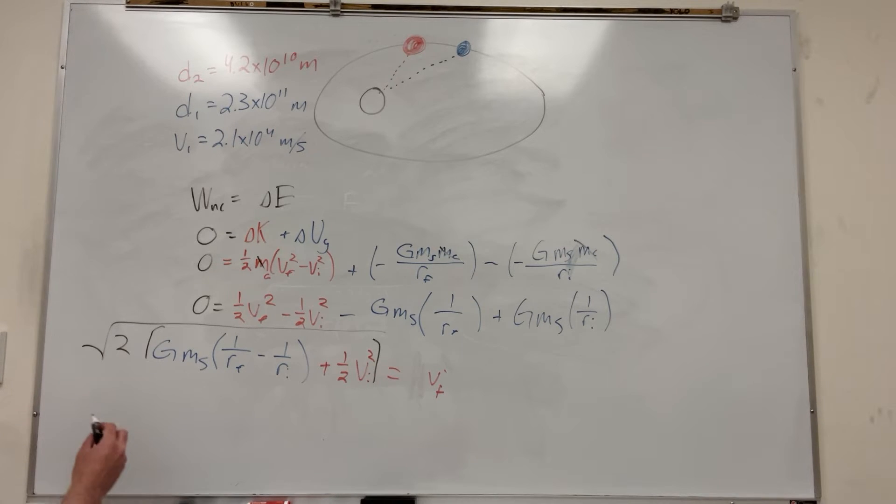So let's plug in our numbers. All you have to do now is plug in your numbers. So it's going to be square root of two. Gravitational constant is 6.67 times 10 to the negative 11. I hope I'm right about that. I'm pretty sure I am.